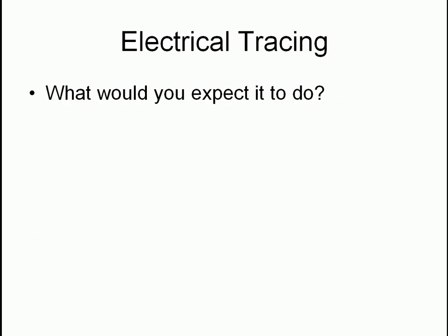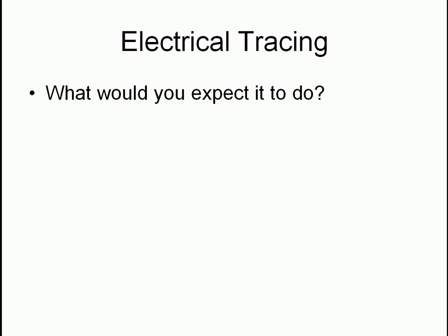Electrical tracing - how does it work? You've got a power source, you've got a heating element which goes all the way along the pipe, and this heats up the pipe. You can see pipes which go all the way around. You would normally put a jacket around it to make sure the heat goes into the pipe and not outside, so you don't lose too much heat. It's expensive - I don't want to know how much power you need to do effective heat tracing with electrical wires.